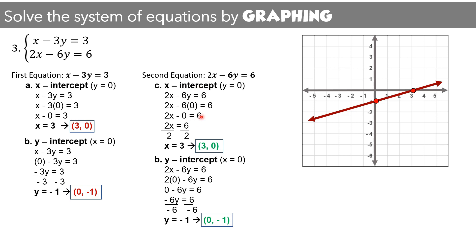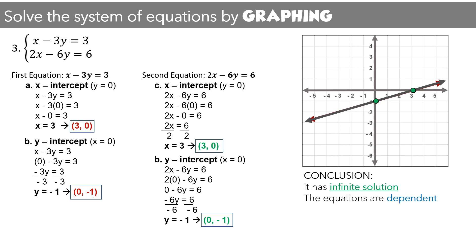Let us graph the second equation. For the x-intercept, we locate 3 on the x-axis, and for the y-intercept, we locate negative 1 on the y-axis, then connect the line. As you can see, these lines are coinciding. Therefore, this system of equations has infinite solutions. The equations are dependent, and the system is consistent.